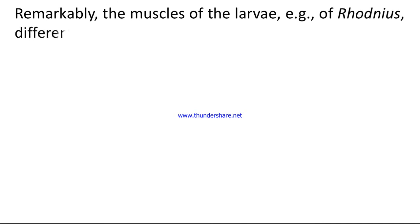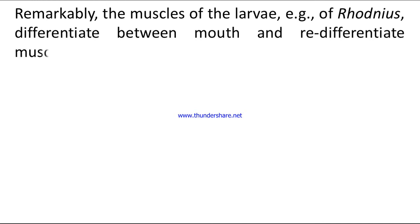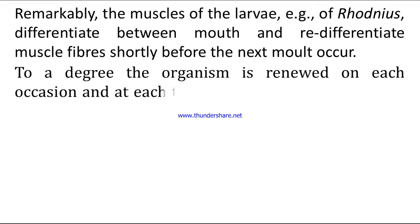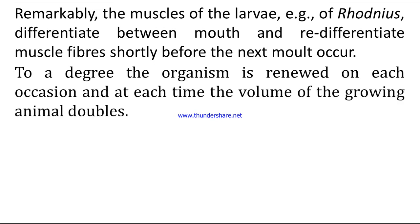Beta-ecdysone acts directly upon those cells that are in a state of dormancy. Within a few hours, the nucleolus is enlarged, different species of RNA begin to accumulate in the cytoplasm, and mitochondria enlarge and multiply by subdivision. Remarkably, the muscles of the larvae — for example, those of Rhodnius — differentiate between mouth and re-differentiate muscle fibers shortly before the next moult. To a degree, the organization is renewed on each occasion, and at each time the volume of the growing animal doubles.